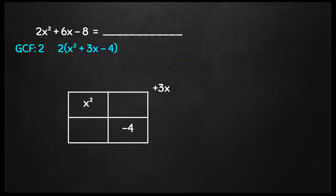When I look at this question, I see that I don't have an a value of 1, but I do have a GCF. That GCF is 2. When I factor out that 2 from every single term, it's going to make my quadratic a little bit easier to factor. I then can put my x squared and my 3x and my negative 4 around my box.